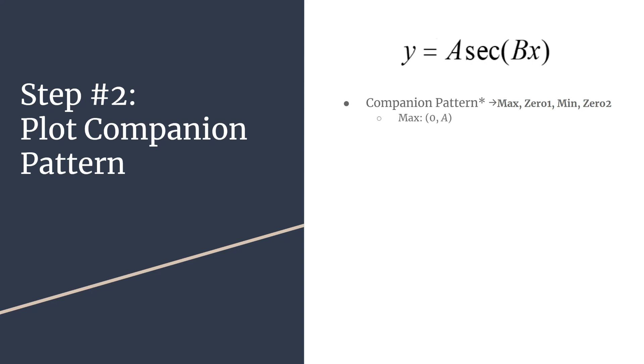So you'll find the maximum at zero. And then whatever your value for A is, the first zero will happen at your first horizontal tick mark, because we very intentionally designed that horizontal axis scale. The minimum will happen at the second horizontal tick mark, and its y coordinate will have the value negative A. And the second zero will happen at the third horizontal tick mark.